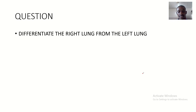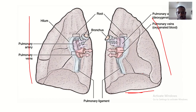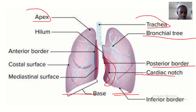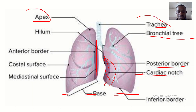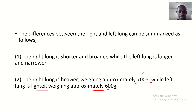So those are the differences between the right lung and the left lung. There are four differences: differences in fissures, differences in the cardiac notch, differences in weight, and differences in shape. See you guys in the next tutorial.